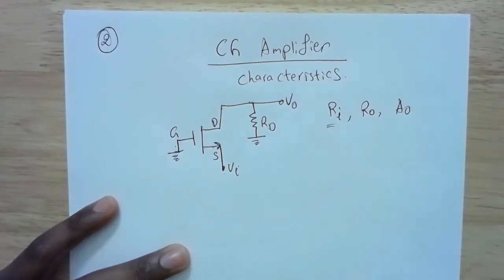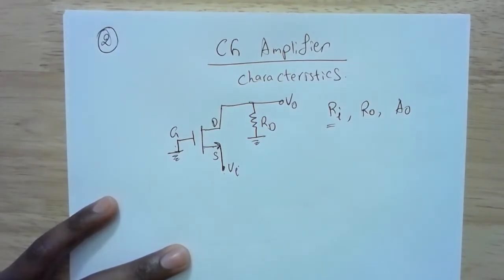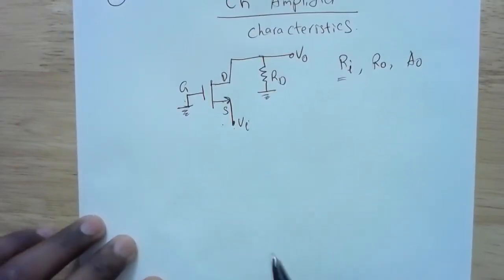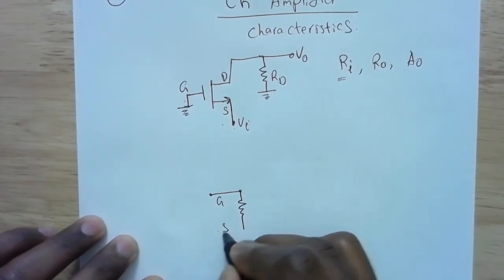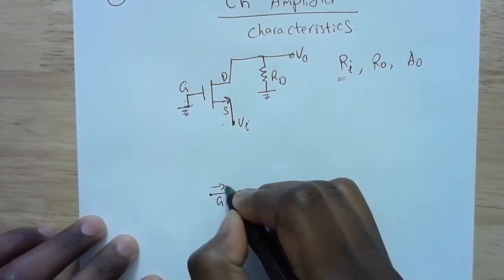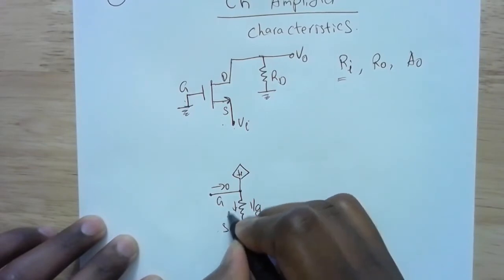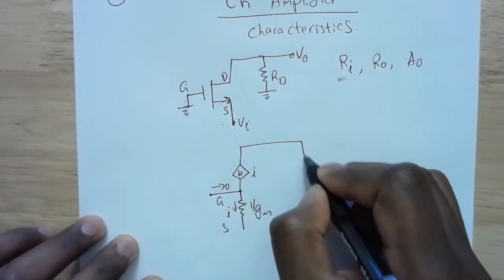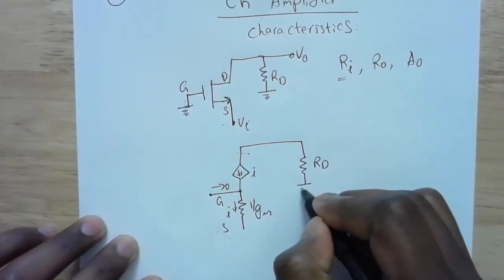Before analysis, I need to replace the MOSFET with one of the small-signal models. Since the source is not grounded here, it would be easier to use the T model. So between the gate and the source I have 1/gm, the current going into the gate is zero, and I have a current source whose value — if the current through this resistance is I in this direction — is also I. Then I have RD.